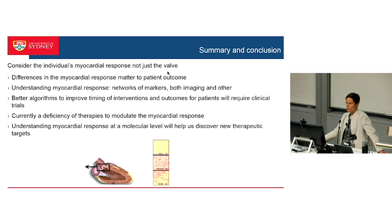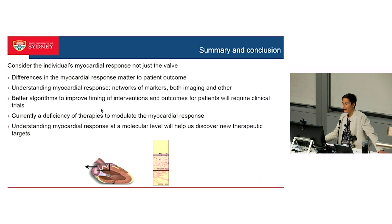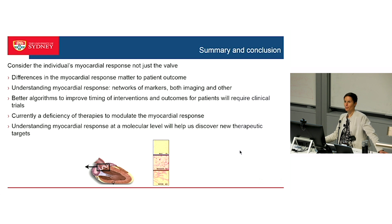To summarise: considering the individual's myocardial response is important for clinical outcome. Differences in myocardial response, from an imaging perspective, do matter to outcome, and improvements in imaging will help us develop better algorithms to get our timing right with intervention. Better algorithms may also include blood biomarkers, and hopefully with our clever colleagues we may be able to identify novel therapeutic targets. There is a real deficiency in therapies that alter myocardial response in individuals with pressure load from aortic stenosis, and understanding this better at a molecular level may help us discover ways to improve that for those individuals.